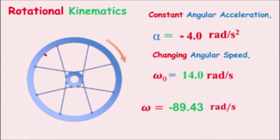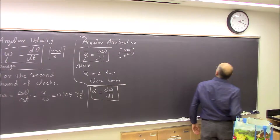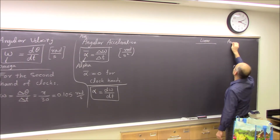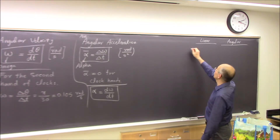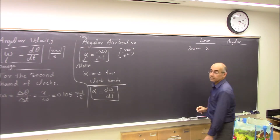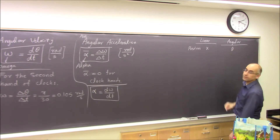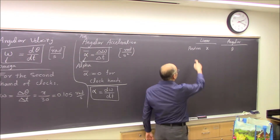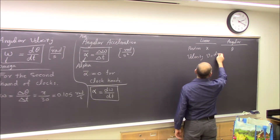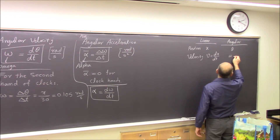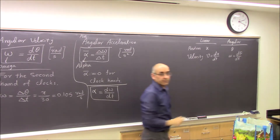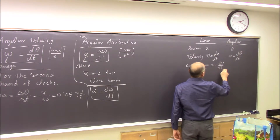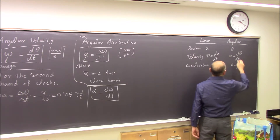In the classroom, we show the analogy between linear and angular kinematics. For position: linear has x, angular has theta. For velocity: linear has v = dx/dt, angular has omega = dθ/dt — how fast the position changes in each case. For acceleration: linear has a = dv/dt, angular has alpha = dω/dt. They are very similar to each other.